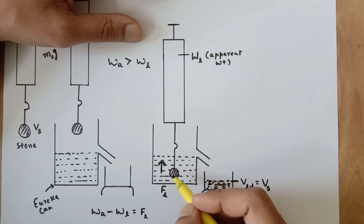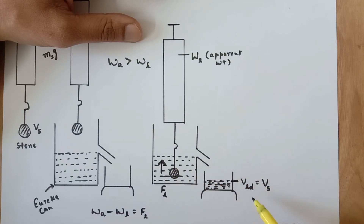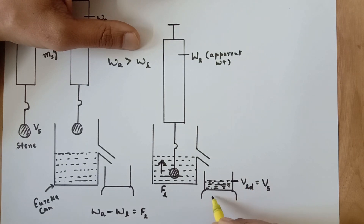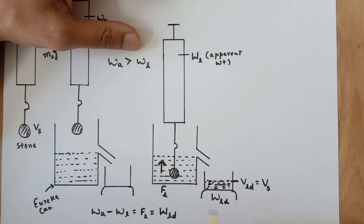When you partially immerse it, half the volume — or whatever amount is inside the liquid — will be the volume of liquid displaced, and these two will always be the same. The weight of the liquid displaced will be recorded on the weighing balance, and that weight of liquid displaced is equal to the upthrust acting in the upward direction. This is Archimedes principle.